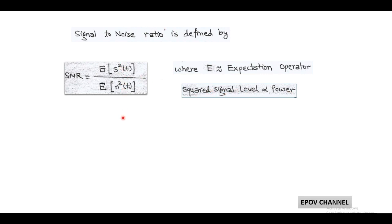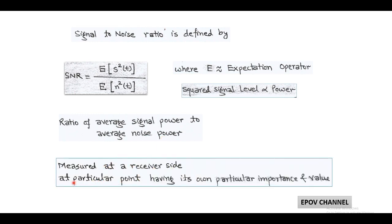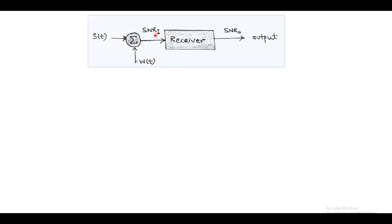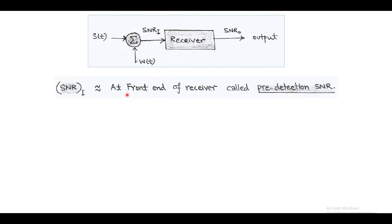This ratio represents the ratio of average signal power to average noise power, which is measured at the receiver side at a specific point — either at the input or at the output — each having its own importance and significance. At the input side of the demodulator, that is called the front end receiver, we can find the input SNR denoted by SNR_i. It is also called pre-detection SNR.